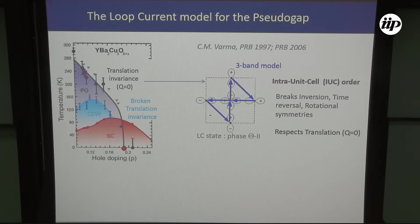There are indications from many experiments — ultrasound measurements, thermodynamic probes — that there could also be an ordered phase which breaks some symmetry and also develops at T*. In that case we know that at T* there should exist a phase which preserves translation invariance but also breaks some symmetry. The question is: what kind of symmetry could be broken at T*?